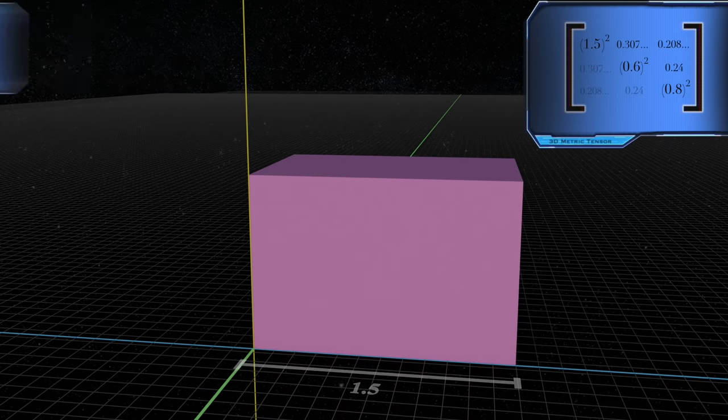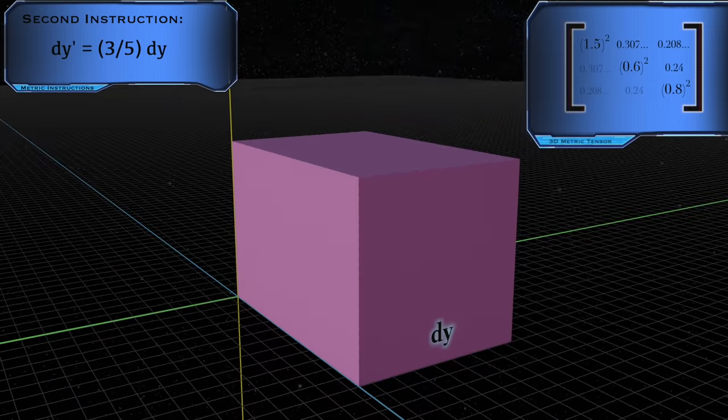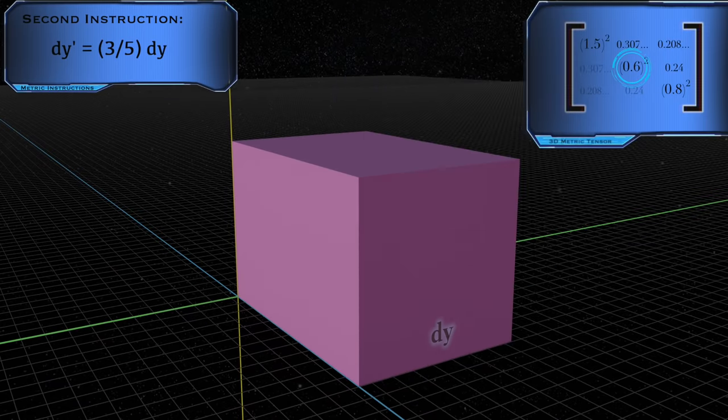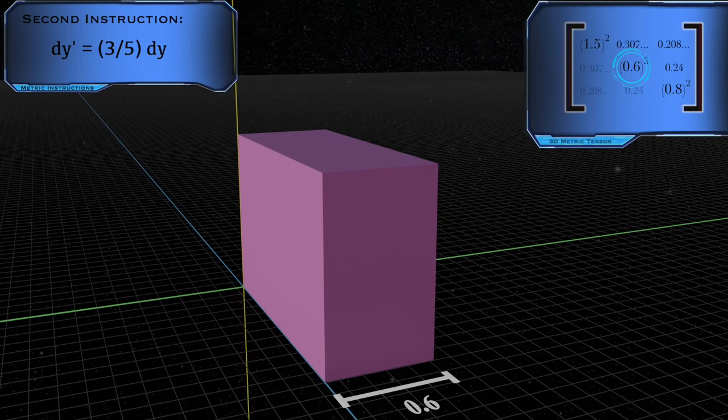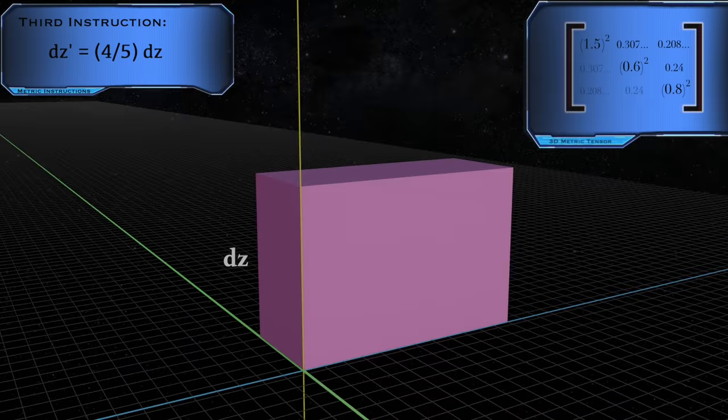The second instruction is to multiply dy by 3.5. The third instruction is to multiply dz by 4.5.